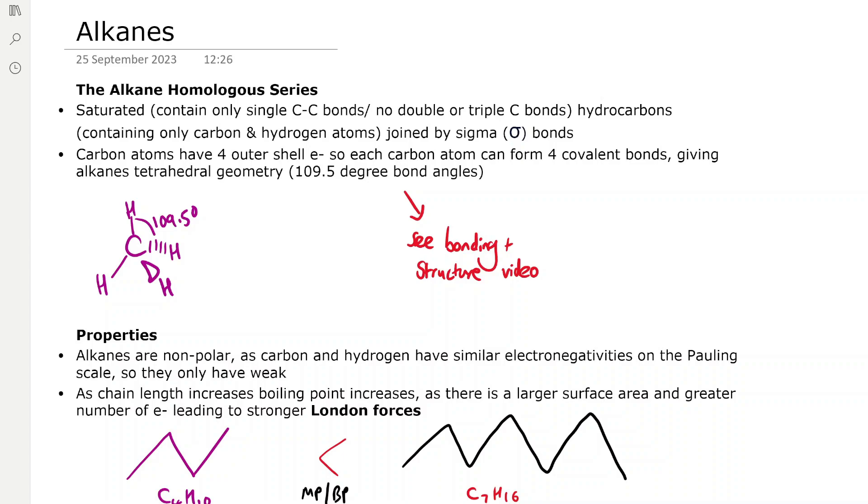The alkane homologous series is a series of saturated compounds containing only single carbon-carbon bonds with no double or triple bonds. They are hydrocarbons containing only carbon and hydrogen atoms joined by sigma bonds.